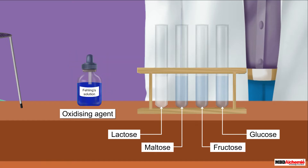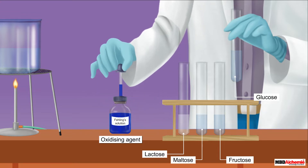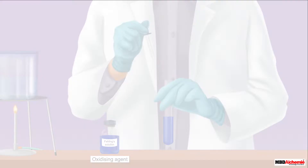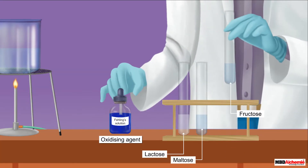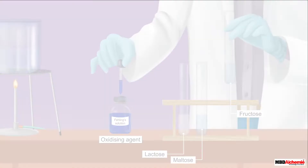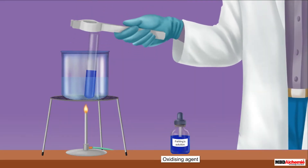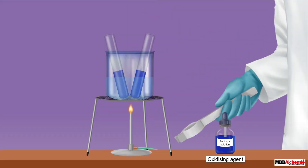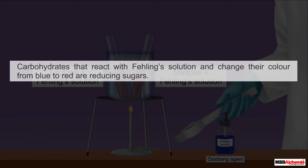Let us first consider glucose. On mixing an aqueous solution of glucose with Fehling's solution and then warming the mixture for some time, the blue color of Fehling's solution changes to red. If the same reaction is carried out between an aqueous solution of fructose and Fehling's solution, the same result is obtained. Even in the case of an aqueous solution of maltose and that of lactose, the result is the same.